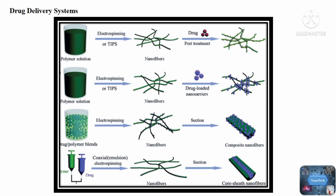This mixture is electrospun to produce nanofibers containing a solid polymer-drug complex. During the process, the solvent is evaporated. Depending on the electrospinning strategy used, different types of nanofibers can be synthesized. A schematic shows the possible methods of drug loading in nanofibers. Incorporation of the drug can be done by various techniques such as physical adsorption, chemical immobilization, blending, coaxial electrospinning, and emulsion electrospinning. Various factors such as fiber composition, swelling, diameter, porosity, construct geometry, and thickness can all influence drug release from electrospun fibers.